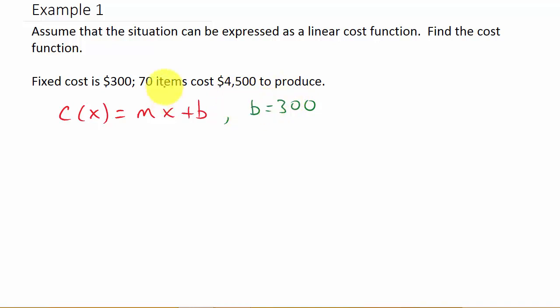And then it tells us that 70 items cost $4,500 to produce. So what does that mean? Well, x represents the number of items. So what they're saying is if I take the 70 and I plug it in for x and evaluate this thing, I should get $4,500 as an answer. So that means that C(70), I'm replacing the x with 70, should equal $4,500. Alright, so now let's take all this information that they gave us and plug it in.